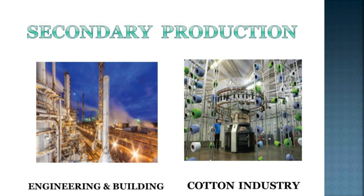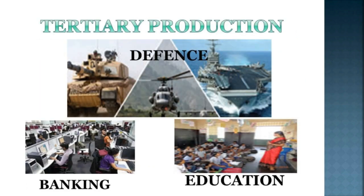Secondary production includes production in manufacturing industries, turning out semi-finished and finished goods from raw materials and intermediate goods. For example, conversion of iron ore into finished steel — engineering, building, and cotton industries. Tertiary production: industries under this sector produce all those services which enable finished goods to be put in the hands of consumers. Examples include banking, insurance, transport, communication, defense, and education.